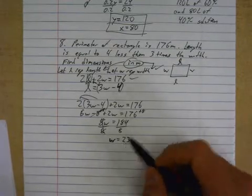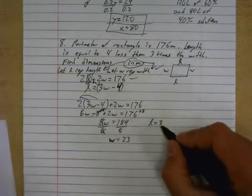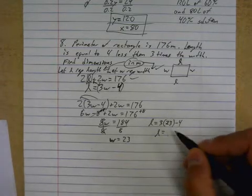You've got W. Now use this equation. L is equal to three times 23 minus four. You get L.